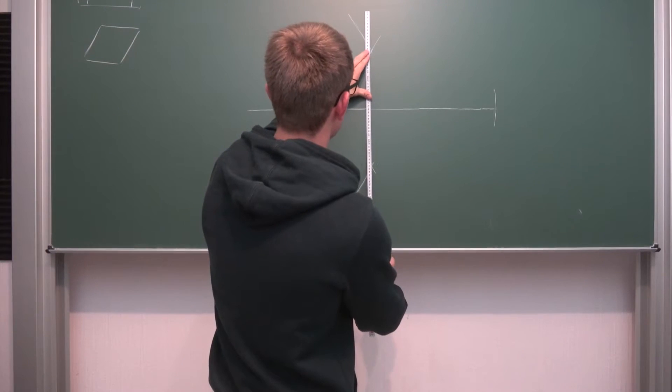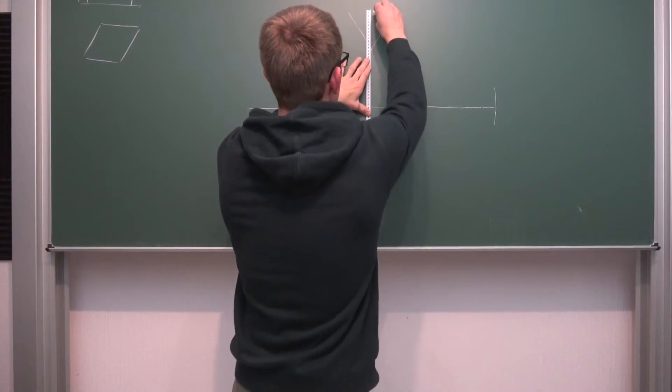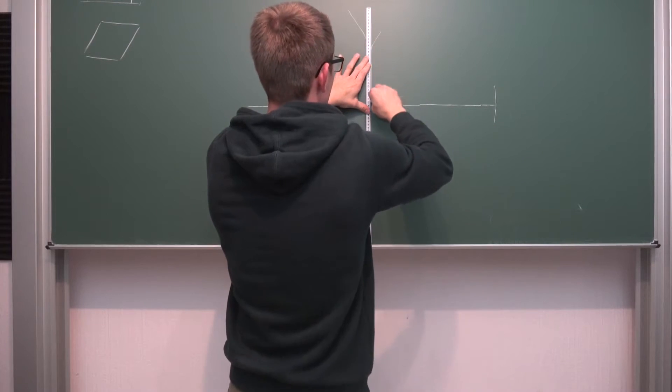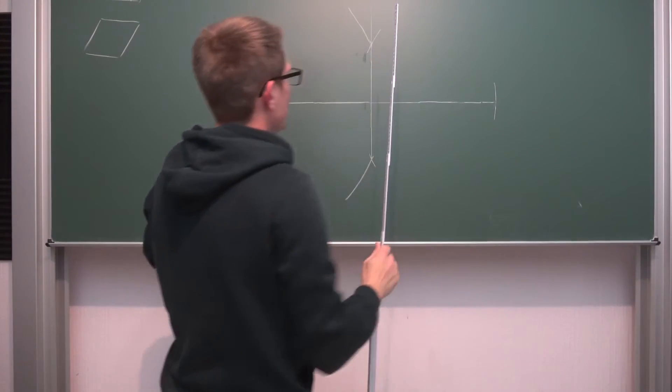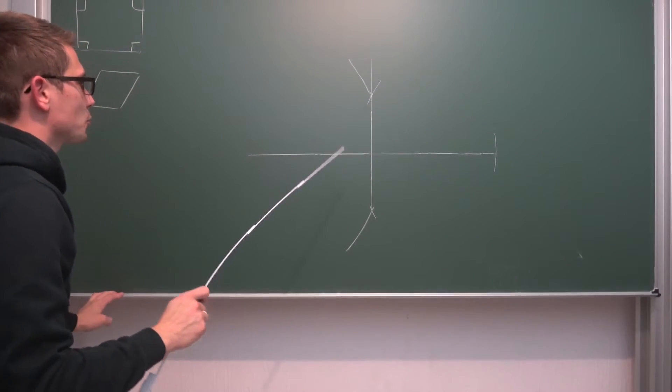Which is also in a 90 degree angle to our original side. I'm just going to make this arbitrarily long. We don't care about that. And now we are basically done. Think back to what a square is.